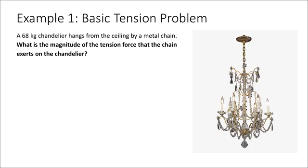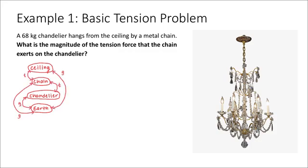To start with a basic example involving tension, we're given a 68kg chandelier hanging from the ceiling by a metal chain, and we're asked to solve for the magnitude of the tension force that the chain exerts on the chandelier. I'll begin by drawing an interaction diagram since I'm already given a sketch. I've listed all of the objects in my system and indicated the interactions. Next, I'll draw a force diagram for the chandelier. There are only two forces acting on it: the earth pulling the chandelier downwards, and the chain pulling the chandelier up.